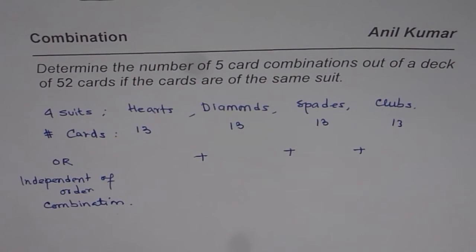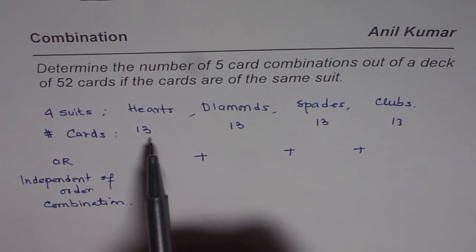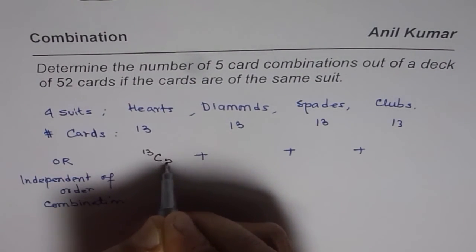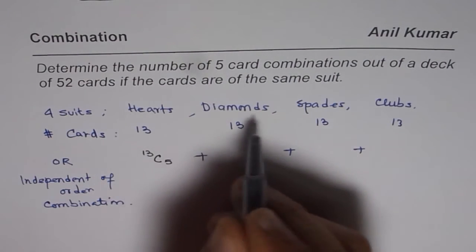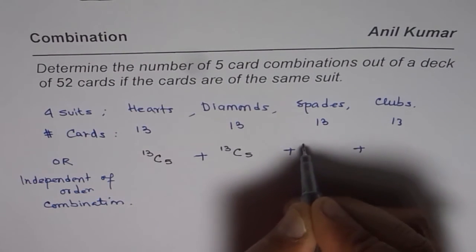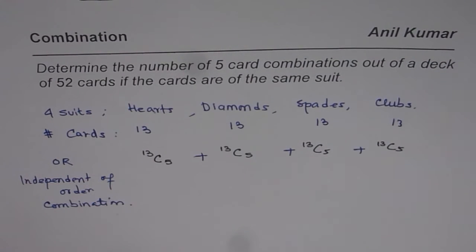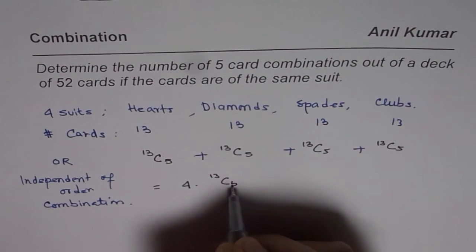We need to select five cards of the same suit from 13. So for hearts it is 13C5, for diamonds it is also 13C5, and similarly 13C5 for spades and 13C5 for clubs. Since these are separate cases, we add them, giving us 4 × 13C5 as our answer.